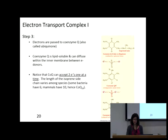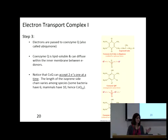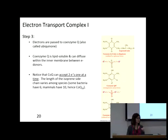We now know everything about complex 1: NADH — we've seen that structure before. FMN — we've now seen that structure; it carries electrons. The iron-sulfur centers have the iron doing the work. And now the electrons are passed along to coenzyme Q.